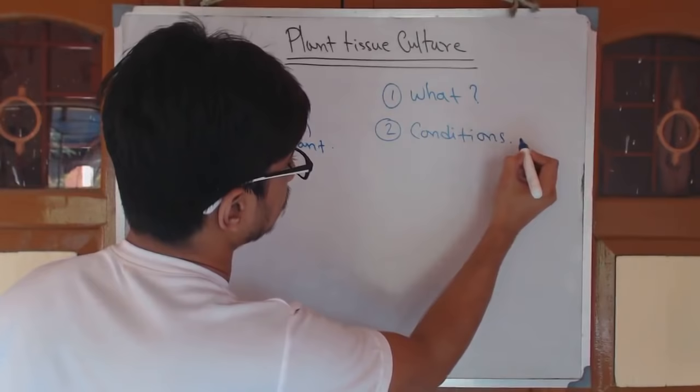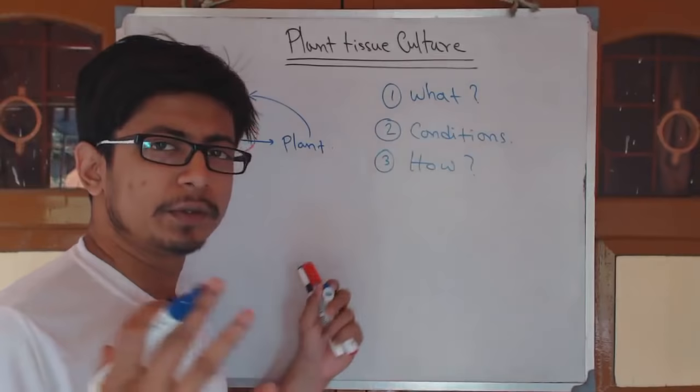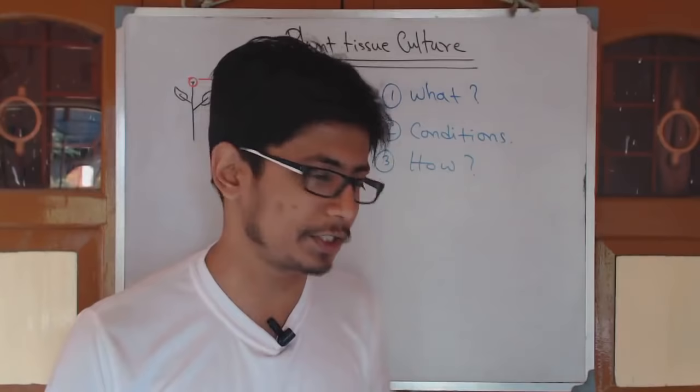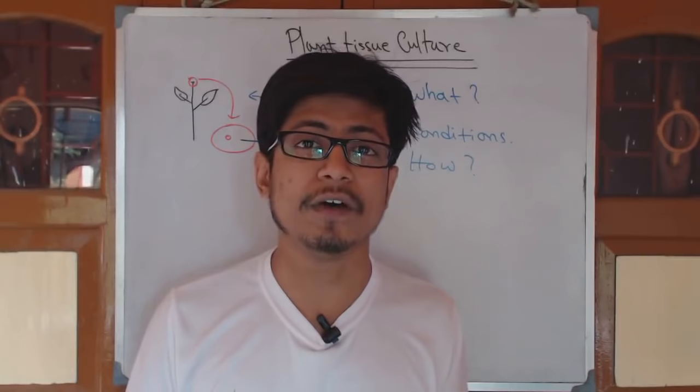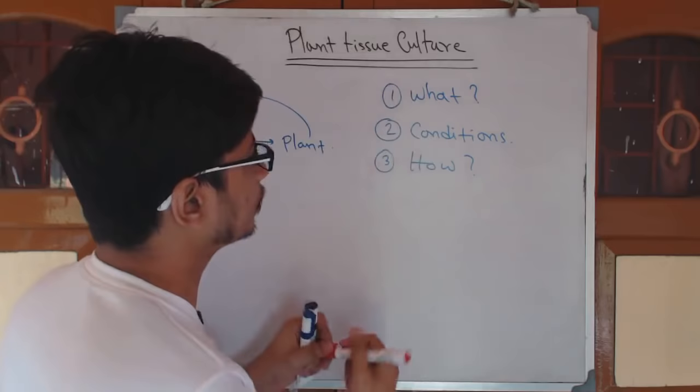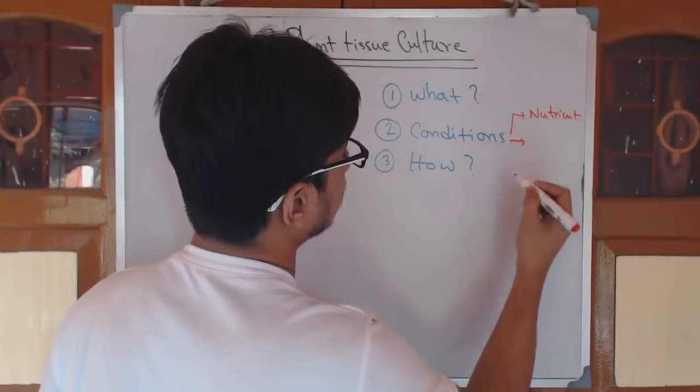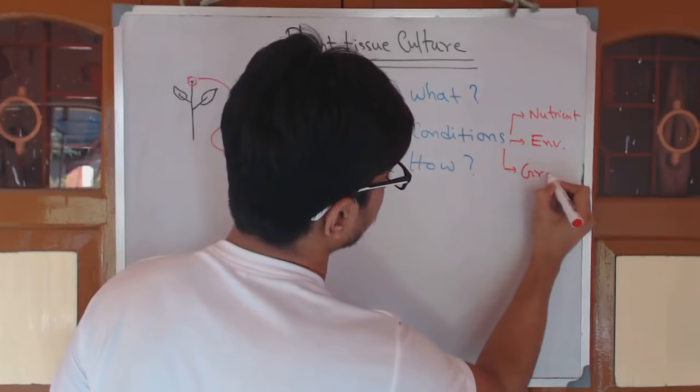The second question about plant tissue culture is: what are the conditions you need to maintain and how do you do that? The conditions we maintain are part of how we do the whole process. We have two — actually three — things: the source of nutrients, the environmental factors, and the growth regulators. These are the three things we require.